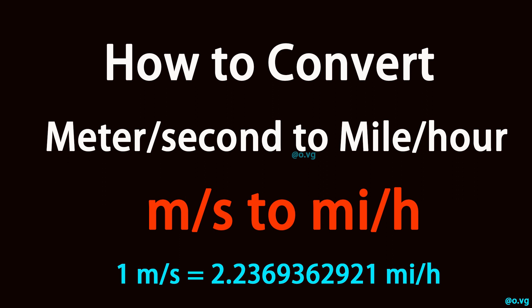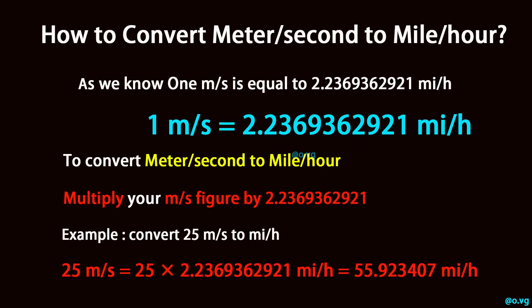How to convert meter per second to mile per hour. As we know, 1 meter per second is equal to 2.2369362921 mile per hour.